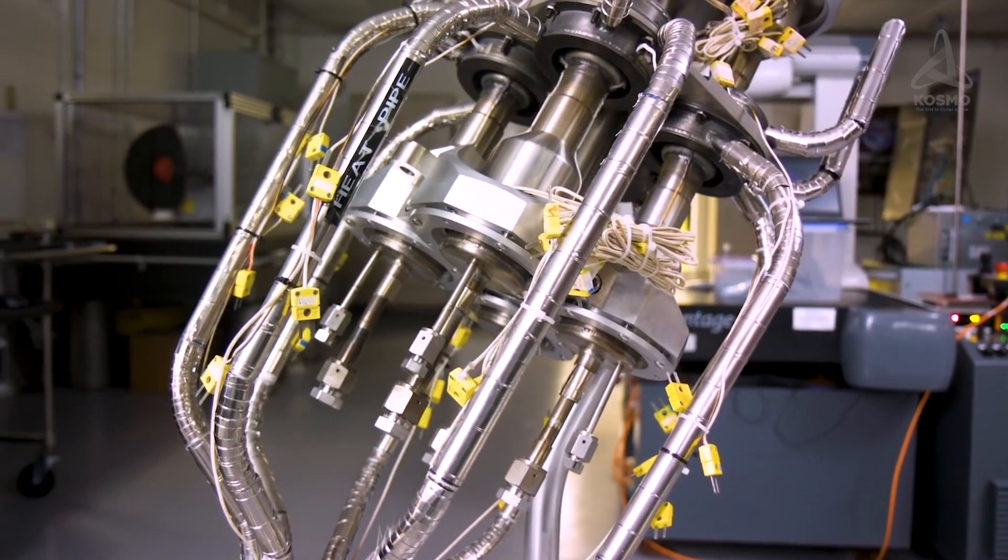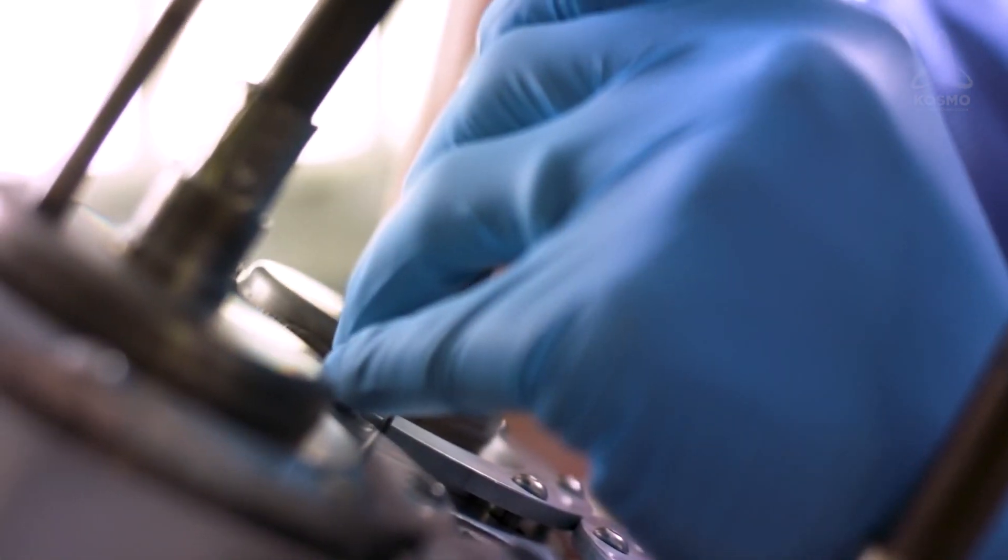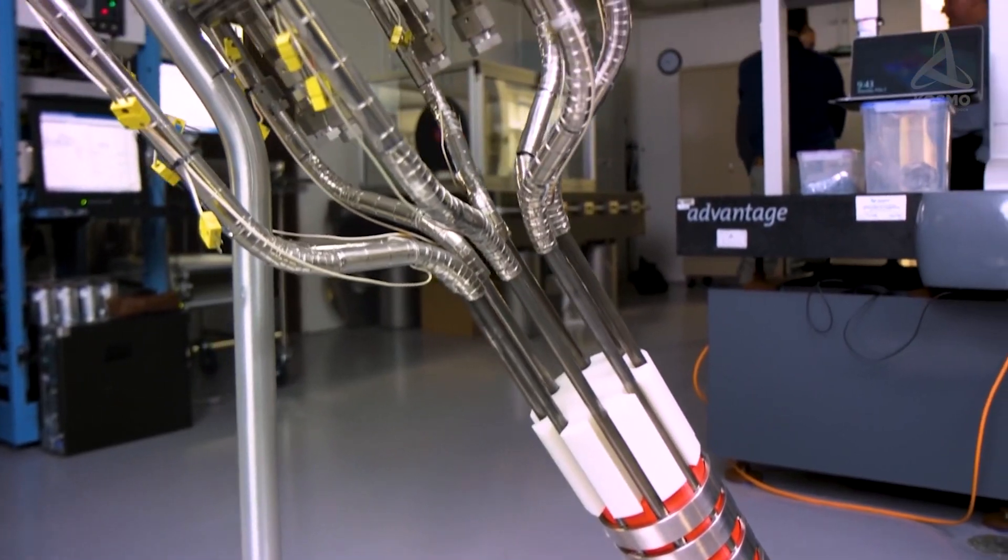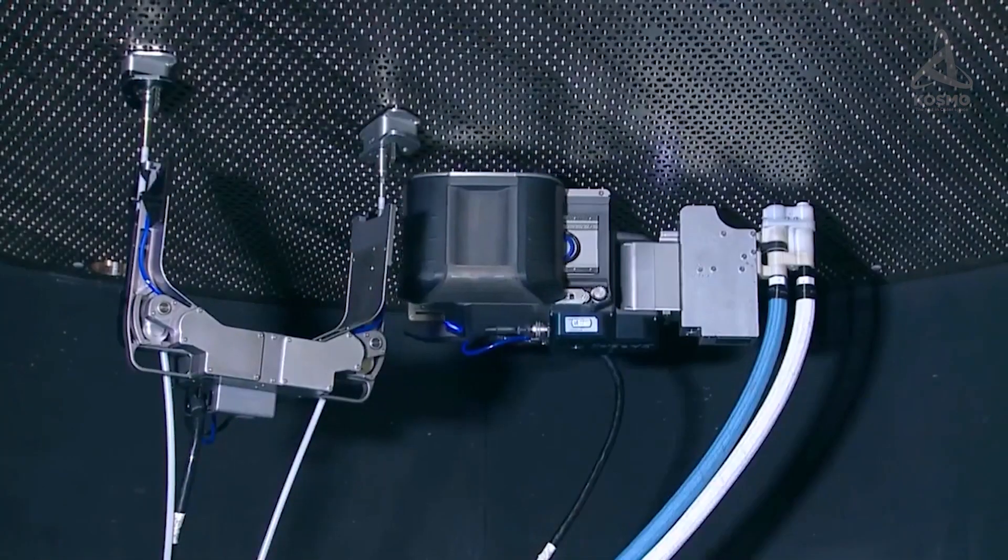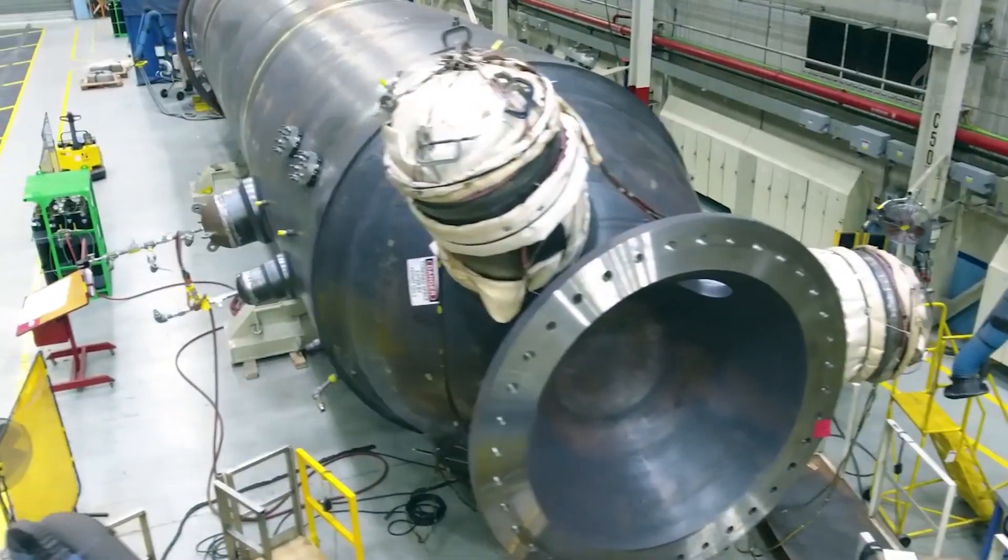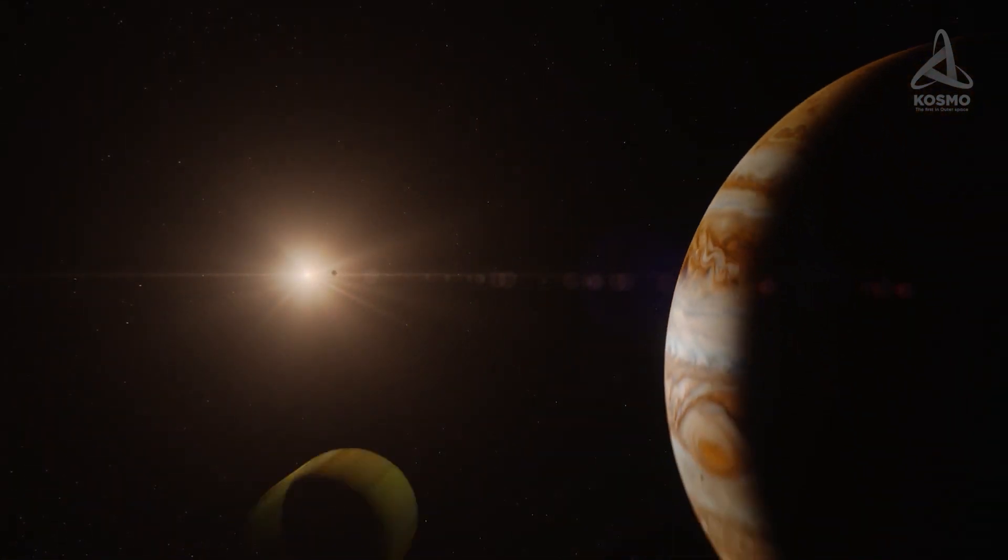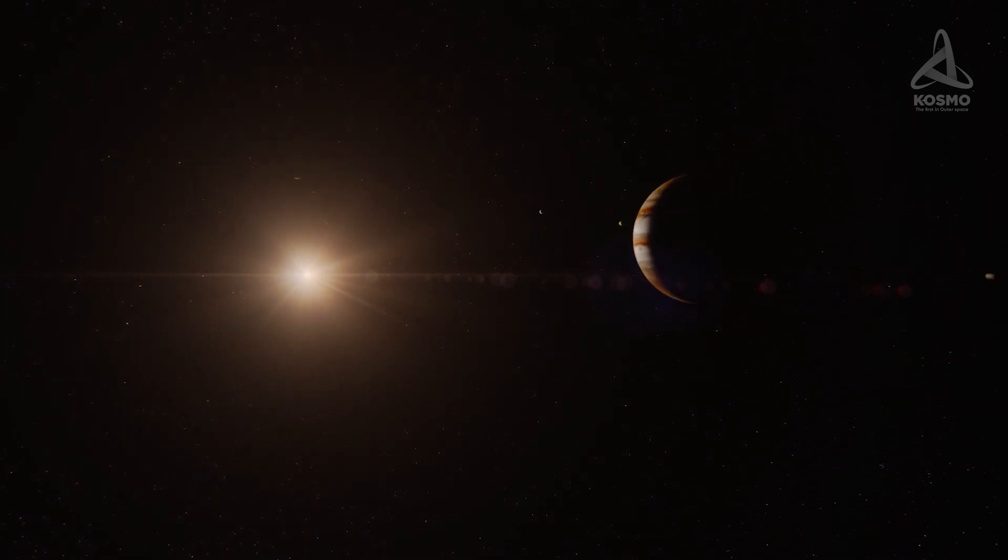Only low-power nuclear engines are known to science today, with several countries already working on the development of more powerful and safer versions. For example, in 2017, NASA and BWXT Nuclear Energy signed a contract on the development of a technology of this kind which will enable terrestrial spacecraft to reach planets like Saturn in a few months' time.